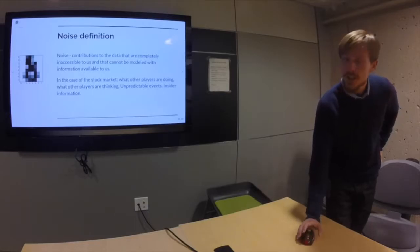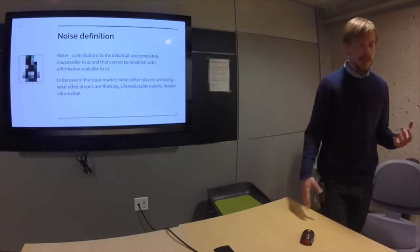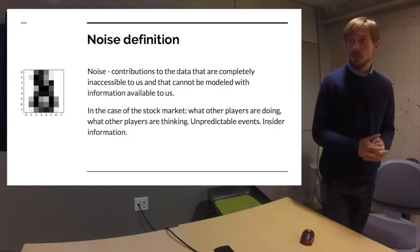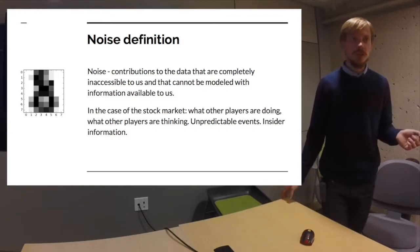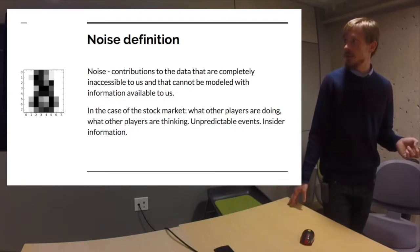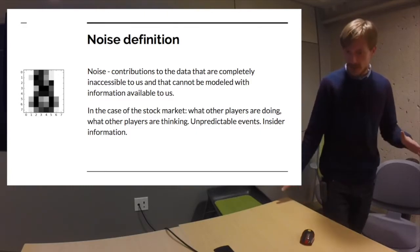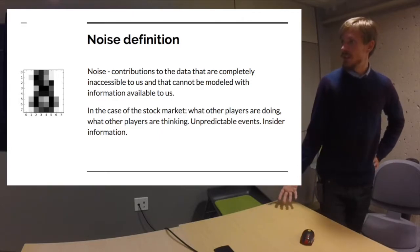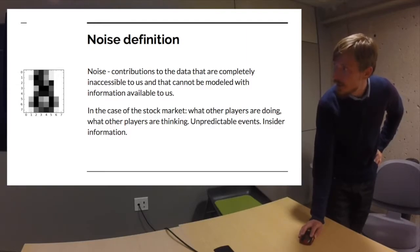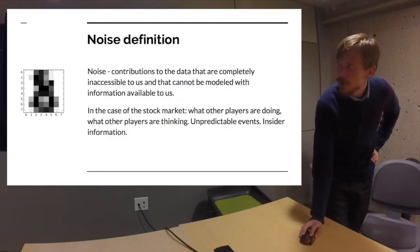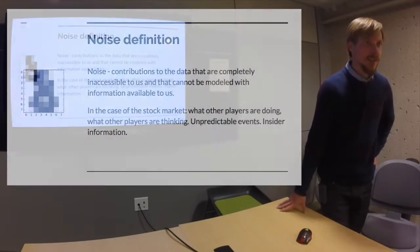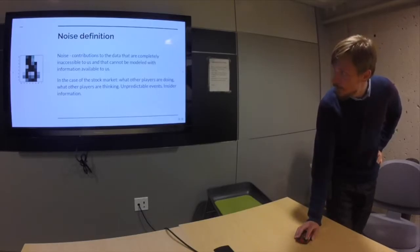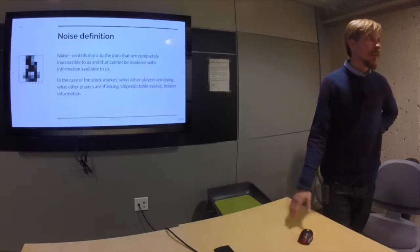Let me properly explain mathematically what I mean by noise. Suppose we have some model for the process: there are certain correlations and indications, but also this huge contribution to the price change that is just inaccessible to us completely. Nothing in the information available tells us anything about that contribution. In the stock market, that's pretty much everything: what other players are doing, what they're thinking, unpredictable events like natural disasters, or insider information we don't have.